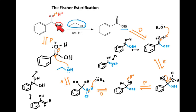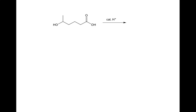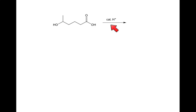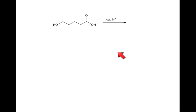Overall, what we've done is our OH was our leaving group — of course, that had to be protonated. Our ethanol was our nucleophile. So instead of OH, we now have OEt to form our ester. For homework, I'd like you to draw the product and draw the mechanism of its formation. In this example, one end of the molecule has a carboxylic acid and the other end has an alcohol. There's no need to draw a separate alcohol reagent — this is an intramolecular reaction. The alcohol OH is going to act as our nucleophile on the carbon of the carbonyl.